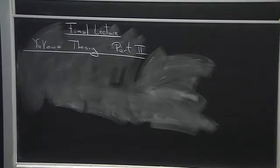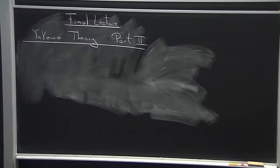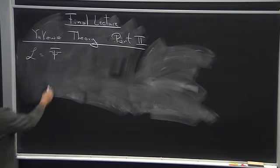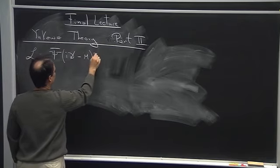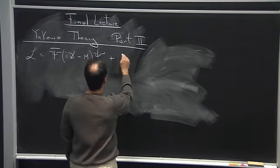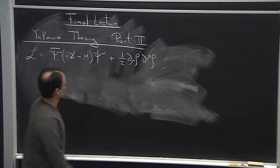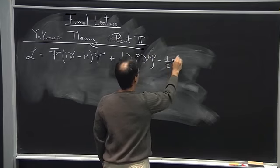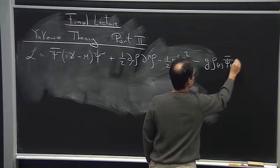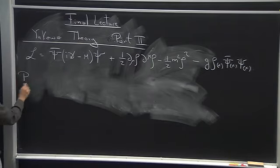Yesterday we discussed Yukawa's theory, and today we're going to have part two of the discussion. The theory had nucleons and anti-nucleons described by a Dirac spinor, and they interact through a particle we call a meson, which is just a real scalar with some mass.